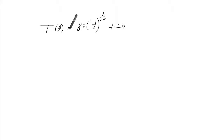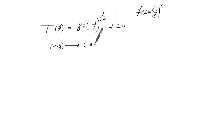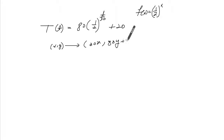We have to sketch this. Let's write the transformation mapping. The parent function is going to be f(x) = (1/2)^x, so we divide by 30, then multiply by x, and we have 80 plus 20.